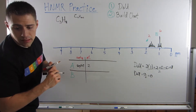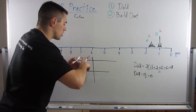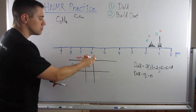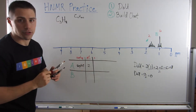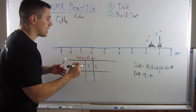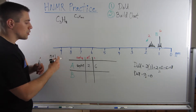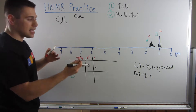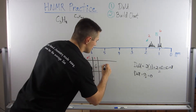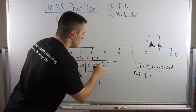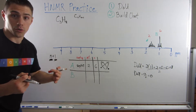For neighbors: since peak A is a septet, using n+1, n must be 6 — so on either side of this position we expect six neighboring hydrogens. We can sketch this out: a position with two hydrogens, and between the neighboring positions there should be six hydrogens total.